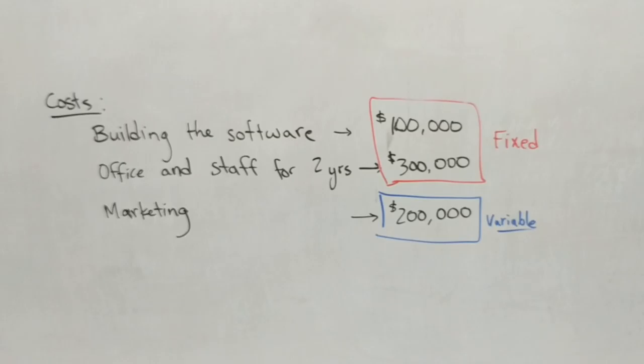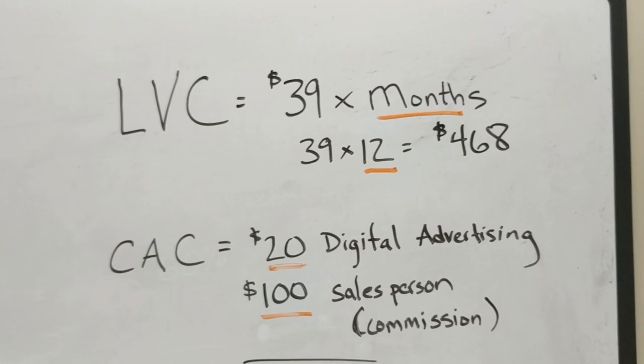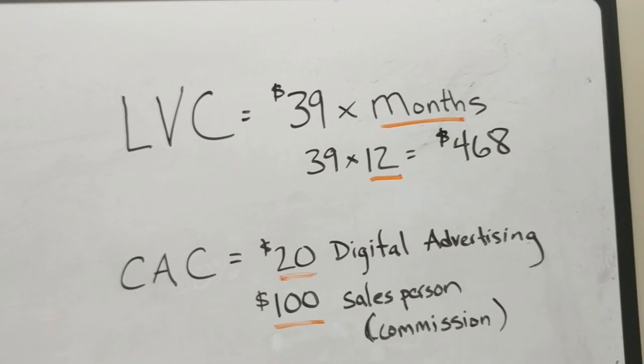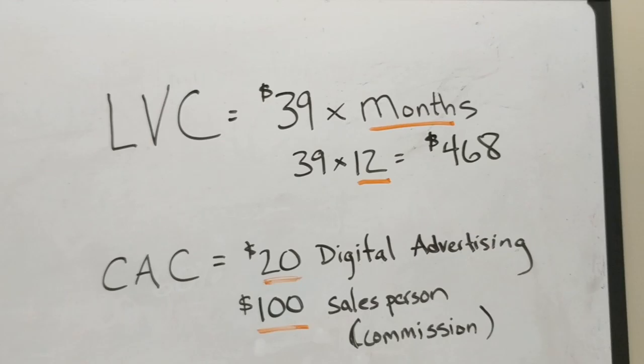Now, if I'm going to calculate the lifetime value of a customer and the cost of acquiring a customer, I need to make some assumptions. For lifetime value, I take that $39 and I have to assume how many months each customer is sticking around. For this example, I made the assumption that a customer sticks around for 12 months. That's $468 for one customer — that's how much I earn from one customer if they stay 12 months.